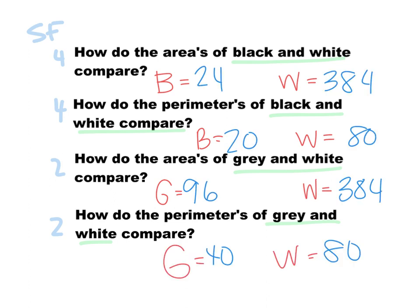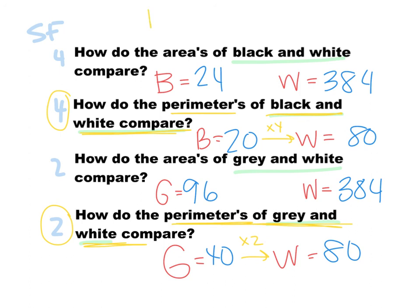Go ahead and check your answers against mine. Let's talk about comparing the perimeters. For black to white, we can take the scale factor of 4 and multiply it by the perimeter of one of them to get the perimeter of the other. So 20 times 4 gives us 80. Same thing for gray to white: the scale factor is 2, and 40 times 2 gives us the perimeter of 80. To find the perimeter, you multiply the original perimeter by the scale factor.